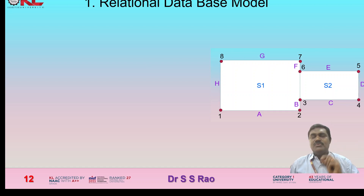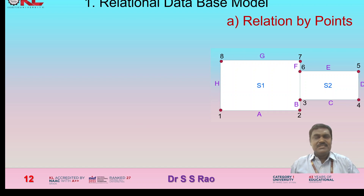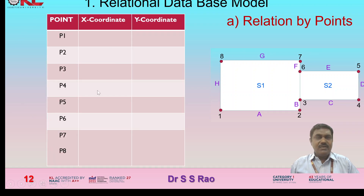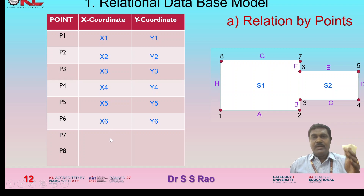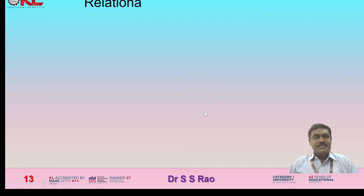Now let us see the relational database model in detail. The first relation is by points — in tabular form, there are eight points, and for each point we store the X and Y coordinates: P1 is (x1, y1), P2 is (x2, y2), P3 is (x3, y3), and so on up to P8 at (x8, y8). This tabular data storage is called relation by points.